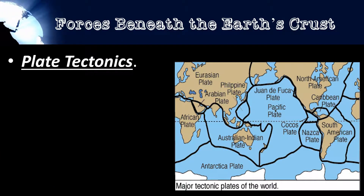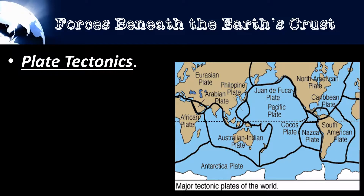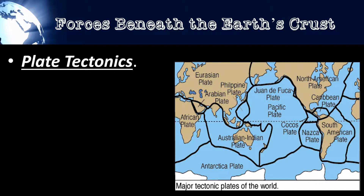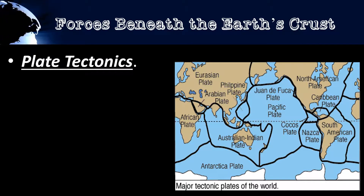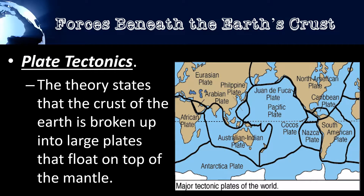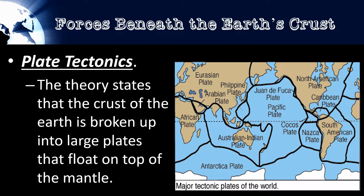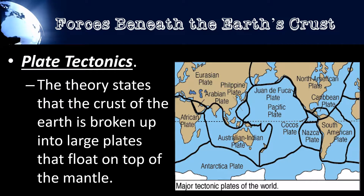Plate tectonics is a theory that states that the crust of the Earth is broken up into large plates that float on top of the mantle. You can see an image over to your right showing the major plates of the Earth's surface. These are continental plates, and they are constantly shifting because they're floating on top of the mantle.